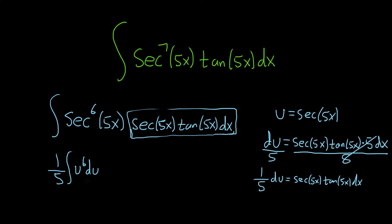Okay, now we're in a good position. Now we can use the power rule. So this is 1/5. And then you add 1, so you get 7. And then you divide by 7. Then we have our c.